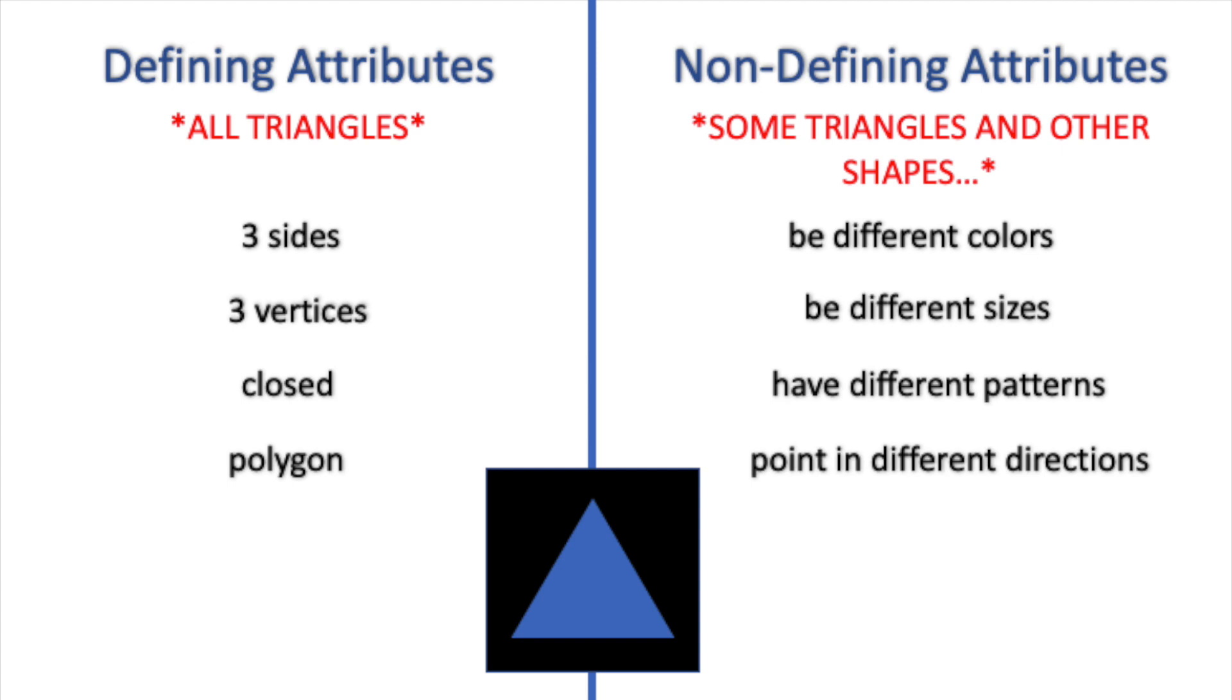So is every triangle going to have three sides, three vertices, be closed, and be a polygon? It sure is, because these are the defining attributes.